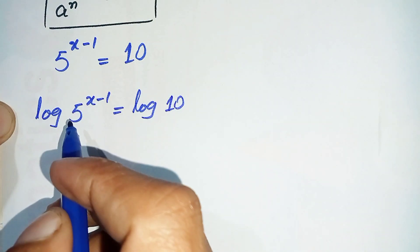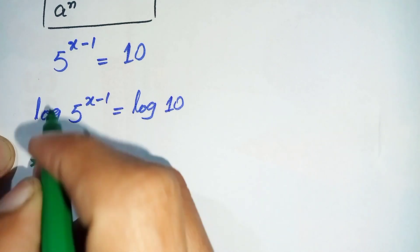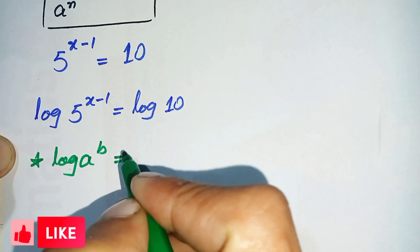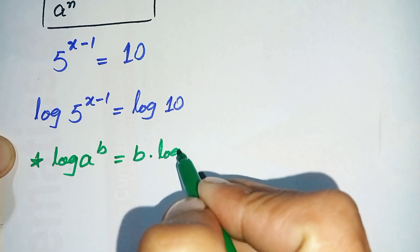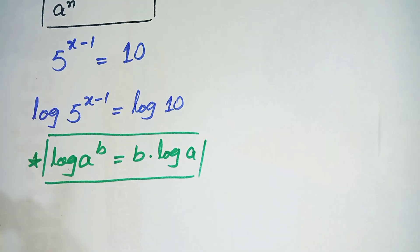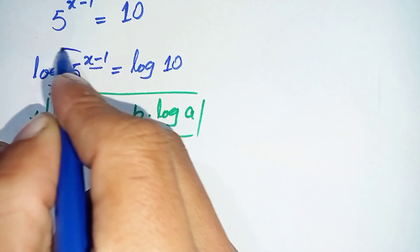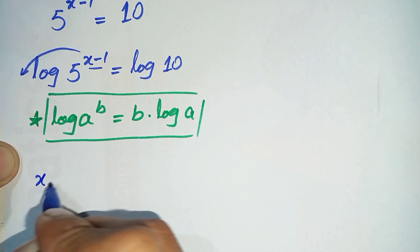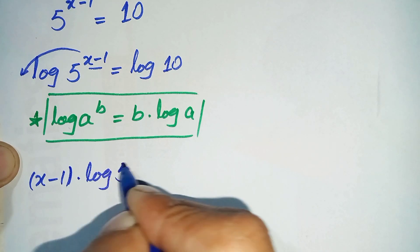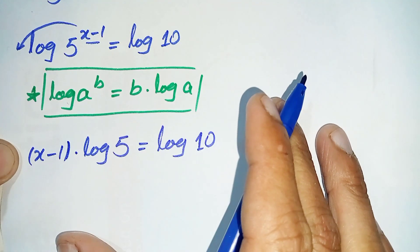Here on the left hand side we will use the log formula: log of a raised to power b can also be written as b times log of a. Using this formula, we shift the power x minus 1 to the front, so it becomes (x minus 1) times log 5 is equal to log 10.